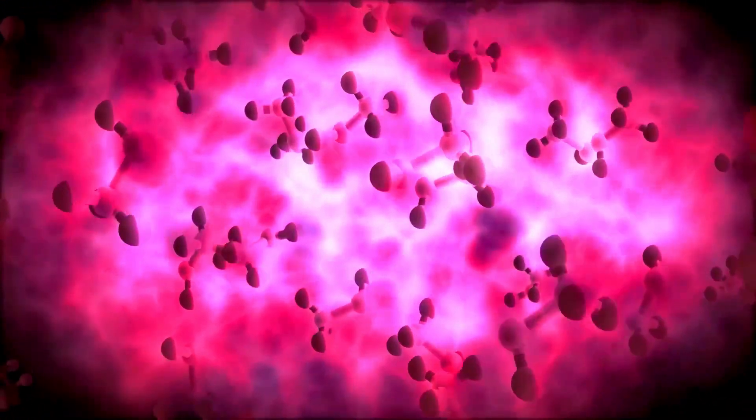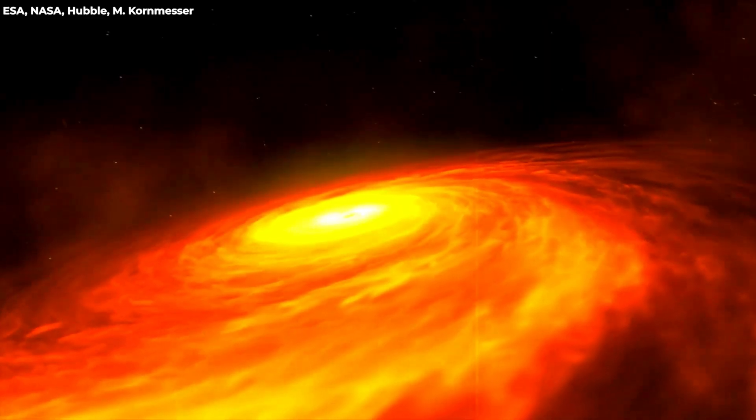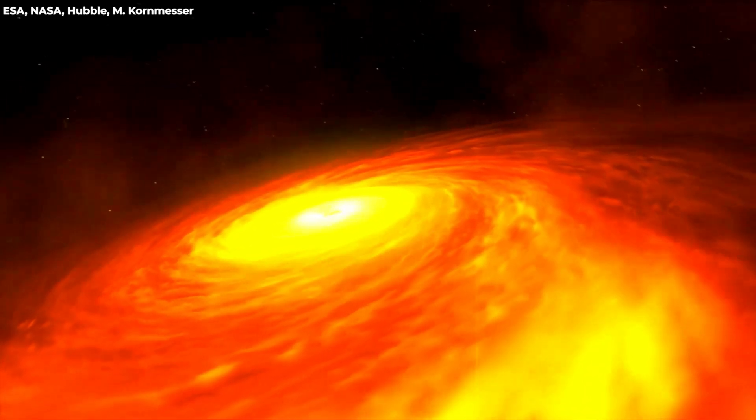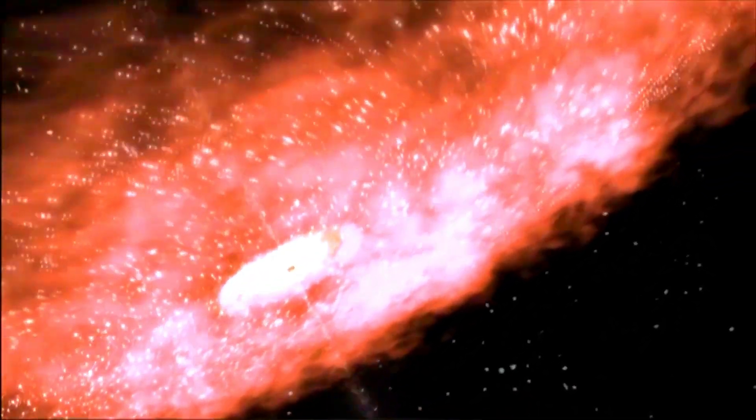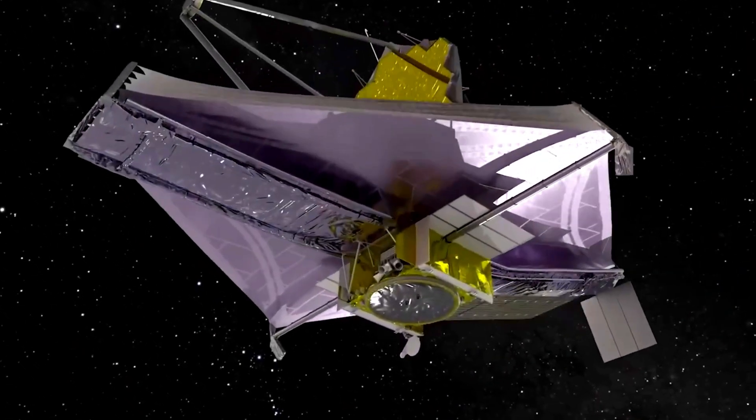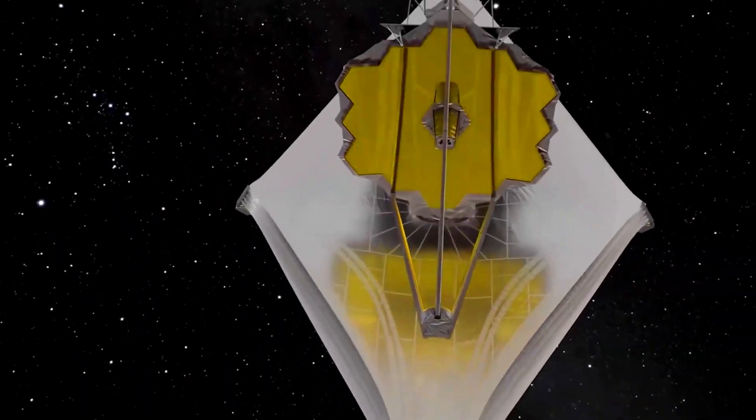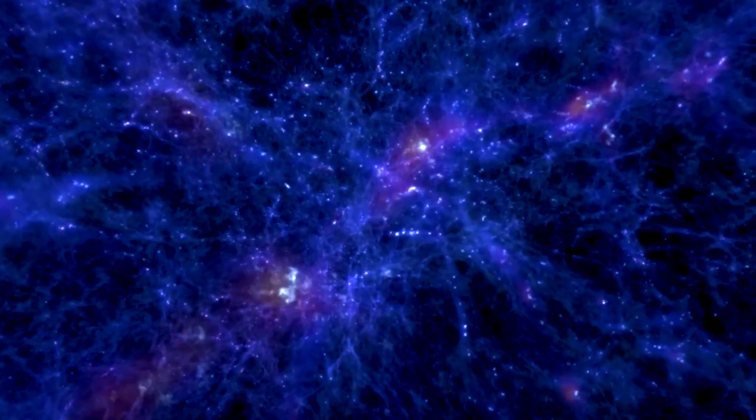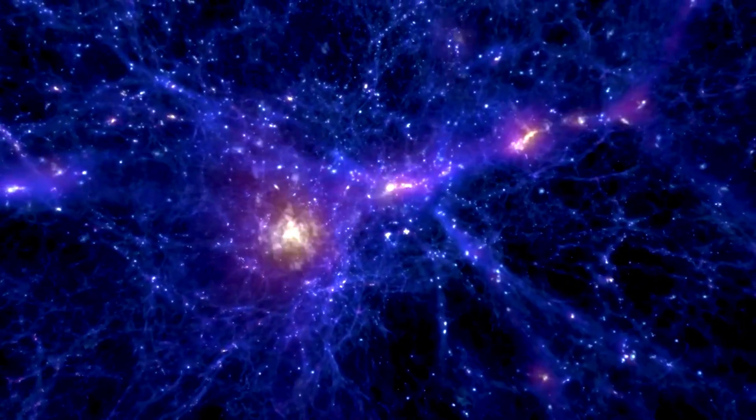These molecules are essentially the building blocks of biology. The fact that these ingredients are present in early star systems suggests that the chemistry of life might be universal, not unique to Earth. Life, or at least the potential for it, might emerge wherever planets are born. JWST isn't just looking for life, it's tracing its cosmic ingredients back to their origin. In doing so, it's painting a picture of a universe not sterile and cold, but rich with potential, brimming with the seeds of existence.